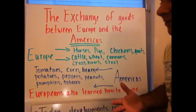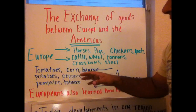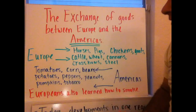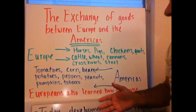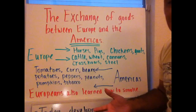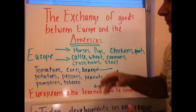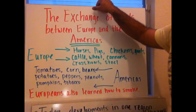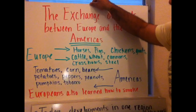The Native Americans introduced to the Europeans tomatoes, corn, beans, potatoes, peppers, peanuts, pumpkins, and tobacco. Europeans also learned how to smoke with the introduction of tobacco. But the food really improved the diet of the Europeans.